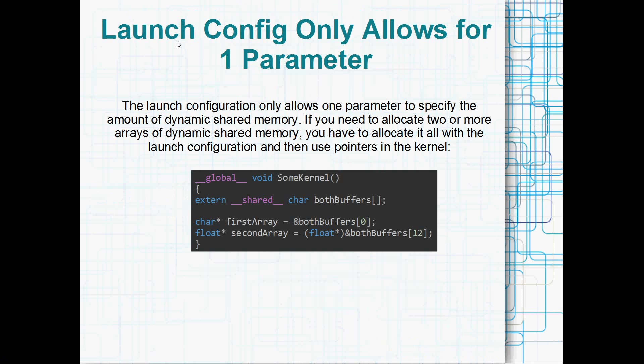Okay, so there is a little bit of a problem with this, and that's the fact that there's actually only one parameter in the launch configuration which specifies how much shared memory, and you might, and you probably will eventually, or sometimes, want more than one array of shared memory, dynamic shared memory that is, per kernel launch. So what you can do is just play around with pointers a little bit. So we might have something like this, extern __shared__ char both_buffers[], and then the launch configuration would specify the exact size of that both_buffers array.